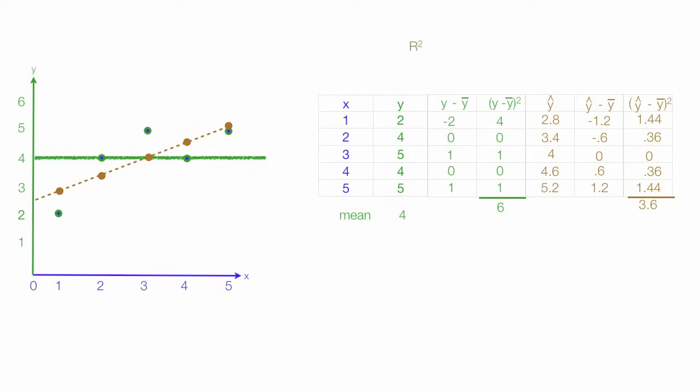So R squared becomes, actually I'm going to put it down to the bottom here instead. R squared is equal to 3.6 divided by 6, which is equal to 0.6. The equation you'll see in your textbooks is something like this. It's going to be the estimated value minus the mean of y, all that squared and added together, divided by the actual value minus the mean of y squared. Again, I'm going to sum all those values. It's an ugly looking equation.